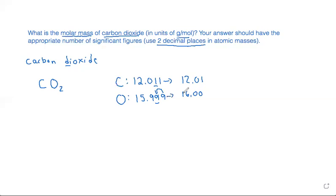So these are my atomic masses or my molar masses for carbon and oxygen. But then to find the molar mass for CO2, I need to take—I have one carbon so I need only one of the molar mass of carbon, which would be 12.01.